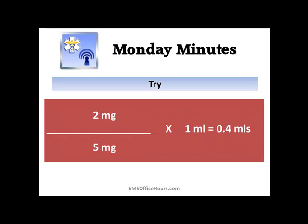Let's try it: you're going to give 2 milligrams, and you have 5 milligrams of the drug in a 1 milliliter vial. Divide the 2 by the 5, then multiply by 1 milliliter, and you end up with a proper dosage of 0.4 milliliters. That's 0.4 milliliters out of that 1 milliliter vial that you're going to draw up and administer to the patient. It's pretty simple — you need three numbers, divide once, multiply once.